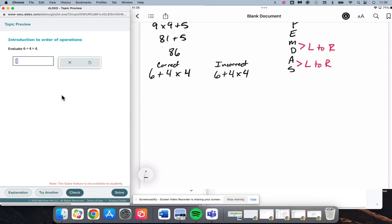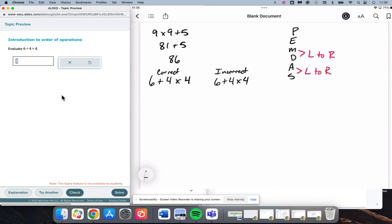So on the left, I look down my list. Parentheses, exponents, multiply. There are no parentheses. There are no exponents. I look for multiplication or division. I do have multiplication right here. So I need to do 4 times 4 makes 16. Then 6 plus 16 is 22. That's going to be the correct answer.